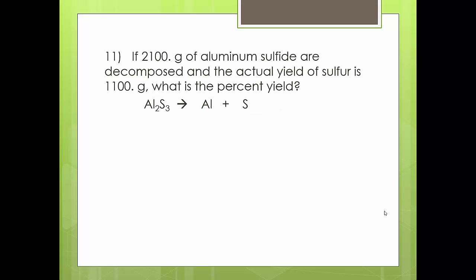Here's what the problems will look like. You're just going to get an extra piece of information: 2100 grams of aluminum sulfide are decomposed and the actual yield of sulfur is 1100 grams. That actual yield is extra information I don't need until after stoichiometry — first I have to do the full stoichiometry problem to find out how much I should have made in theory.